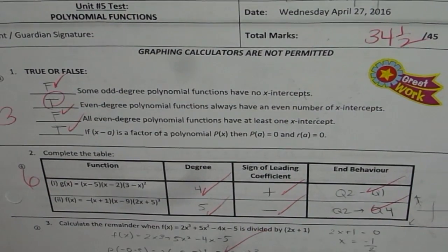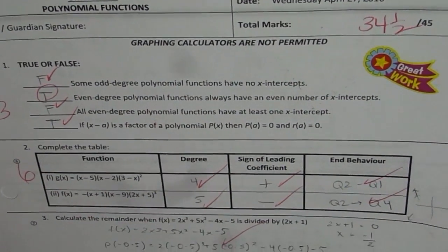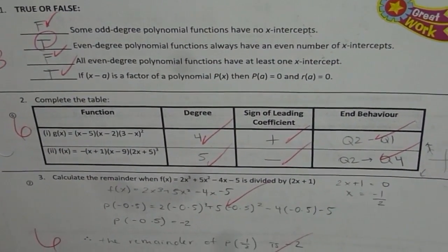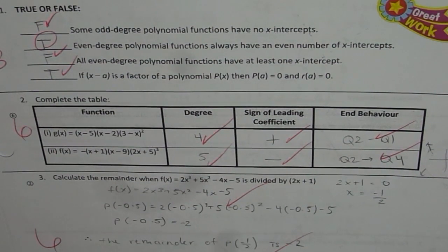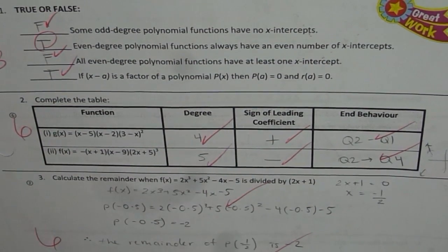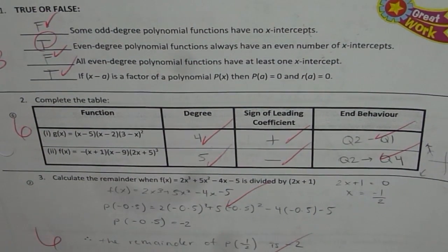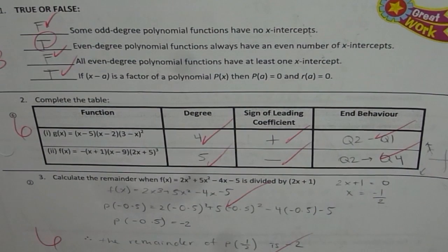Question number two is: complete the table. We are given different functions and you need to find the degree, the sign of the leading coefficient, and describe the end behavior. I hope you can do this question on your own.